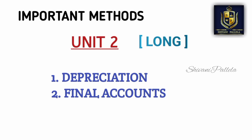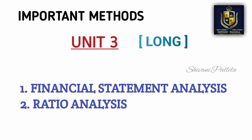Now we will discuss important methods unit-wise. From Unit 1 you need to learn journal entries, ledger, and trial balance. Out of these 3 methods, one problematic question will compulsorily come for long marks. They may ask journal entries, ledger, or trial balance. Journal entries is the most important, so try to learn journal entries problematics from Unit 1.